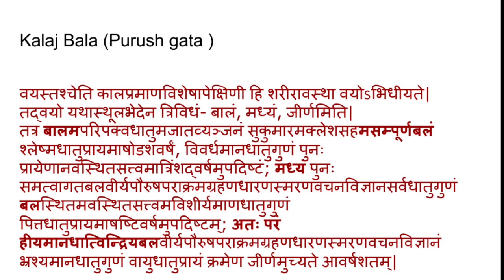You can see on the screen. They have written, if there is Baal Vaya, he is Asampoorna Bala. Baal Vaya is Asampoorna Bala. Madhya Vaya is having Bala — that is Optimized Bala. And Atah Param, that is when you cross Madhya Vaya, the Dhatu get deteriorated or they start getting deteriorated. Of course, the last product of the Dhatu gets affected. So the Bala is Heeya — rather, they have used the specific word Heeyamanad — indicating the process of getting deterioration.